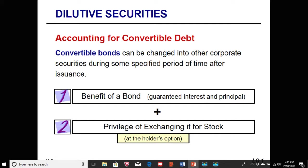Let's start with how we account for convertible debt. Convertible bonds are able to be changed into another form of corporate security during a specified time after issuance at the holder's option. They're guaranteed the benefit of a bond — guaranteed interest and eventually their principal at maturity — but they also have the option to exchange for a stated number of shares of stock, which the holder must initiate.